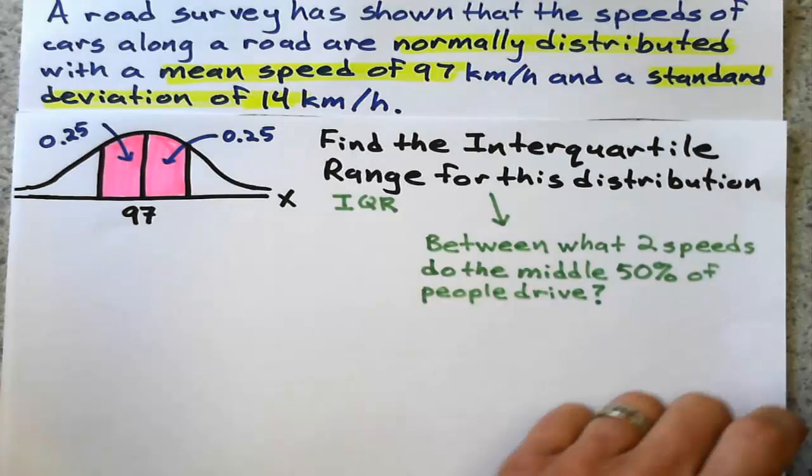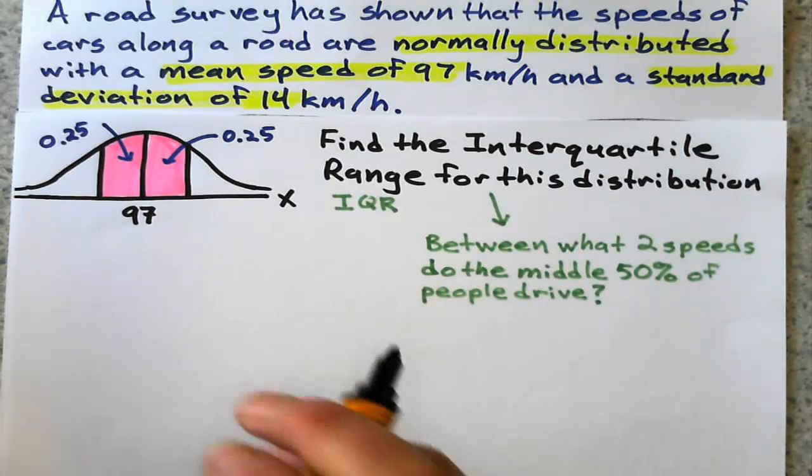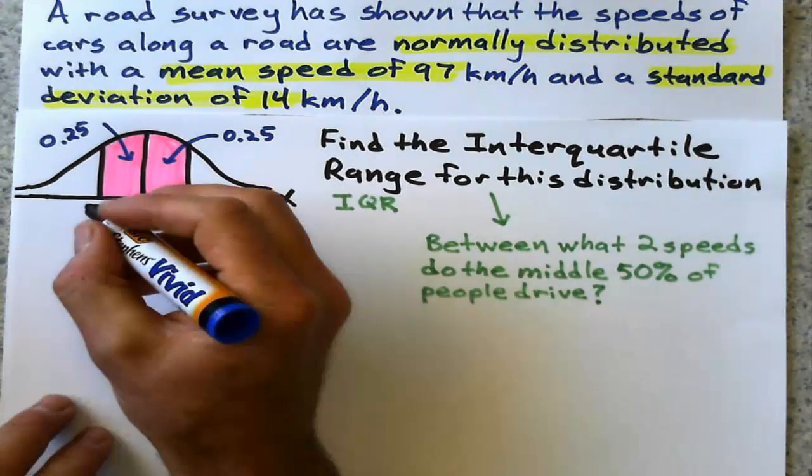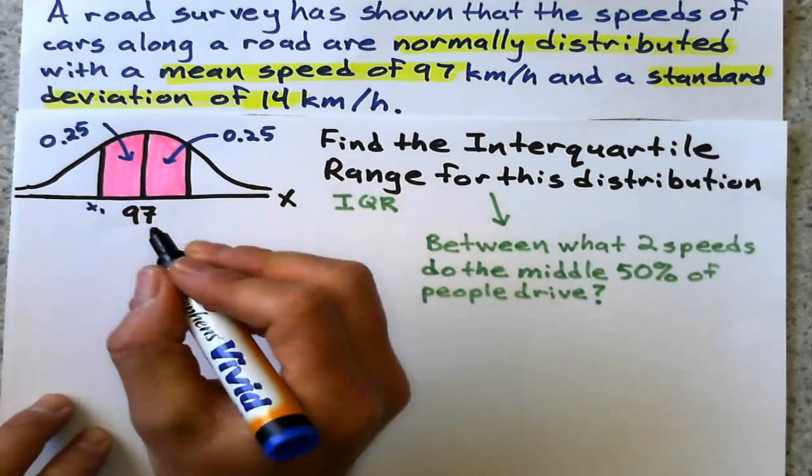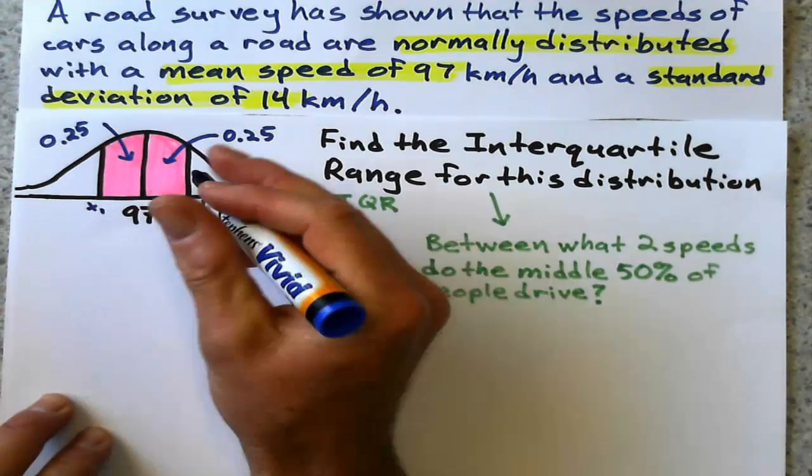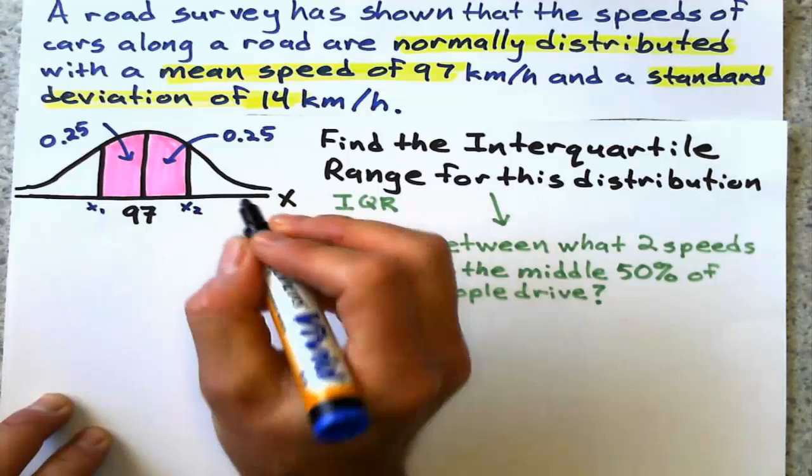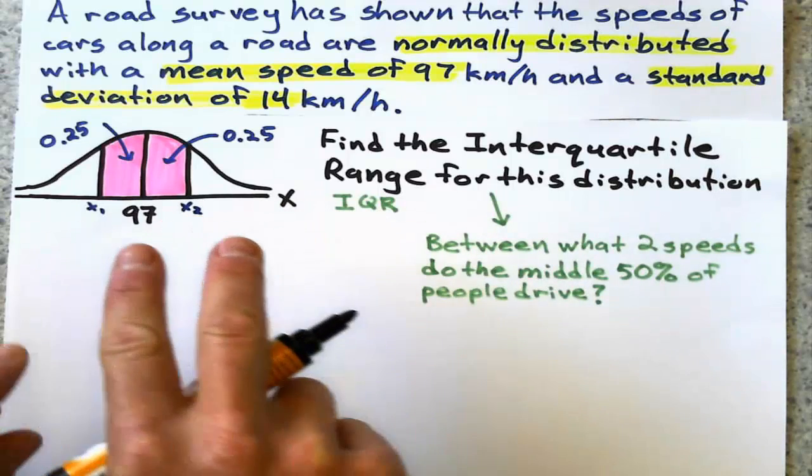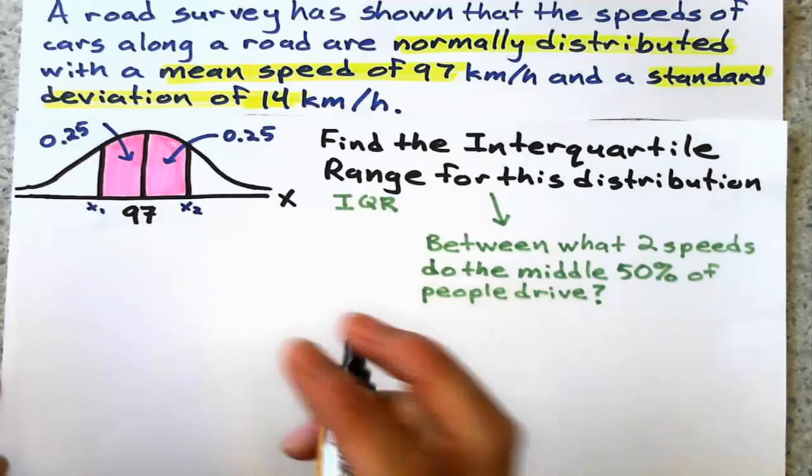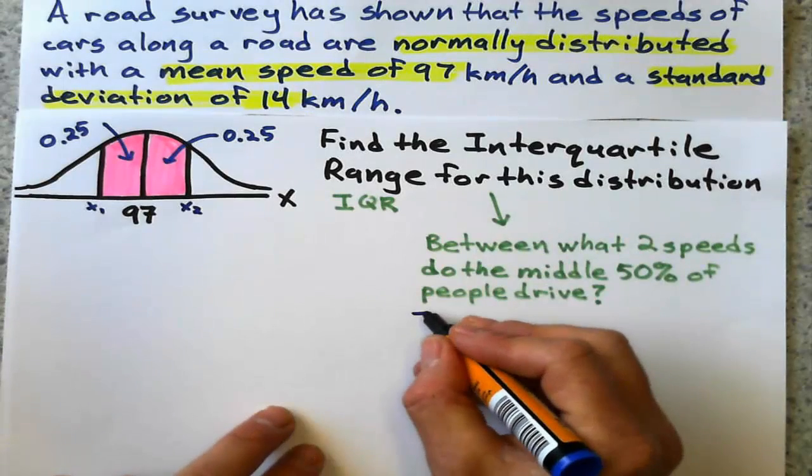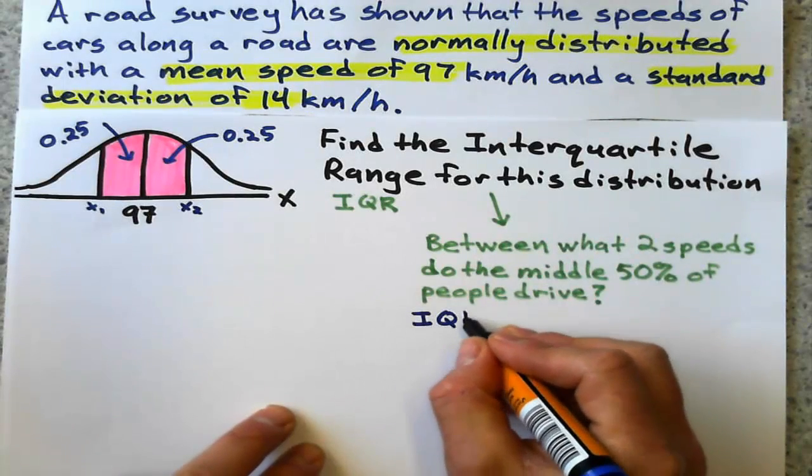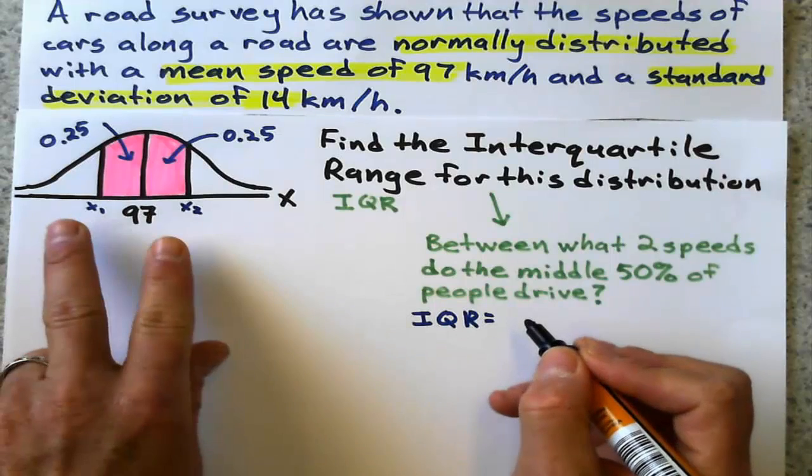That means I want to find these two speeds right here: x₁, which will be below the mean, and x₂, which will be above the mean. So the interquartile range is going to be the difference between those two quartiles.